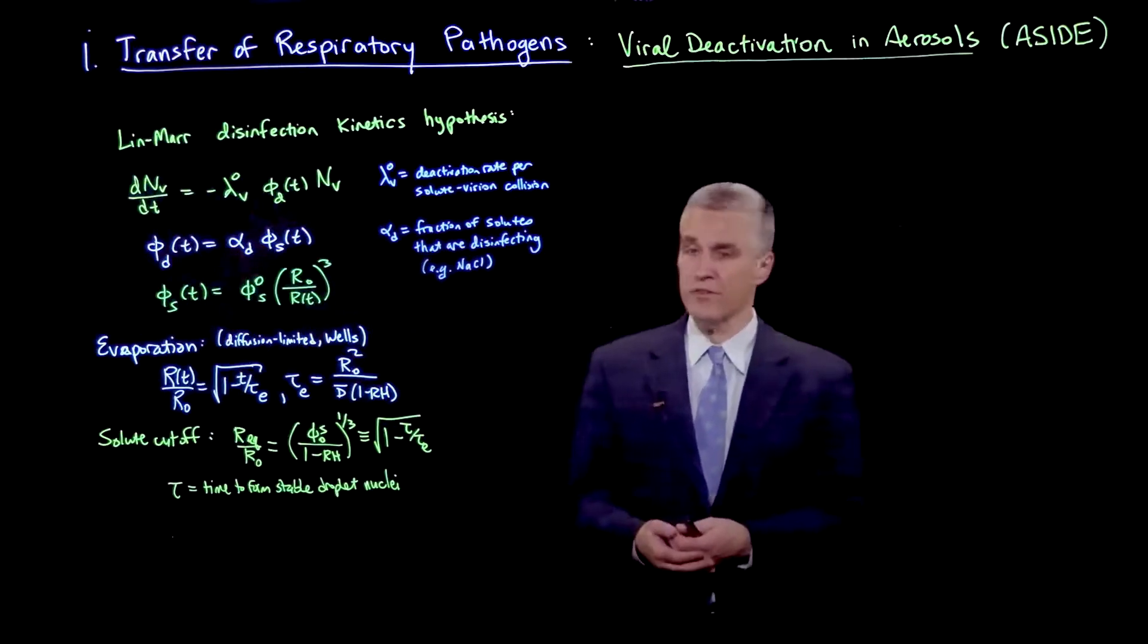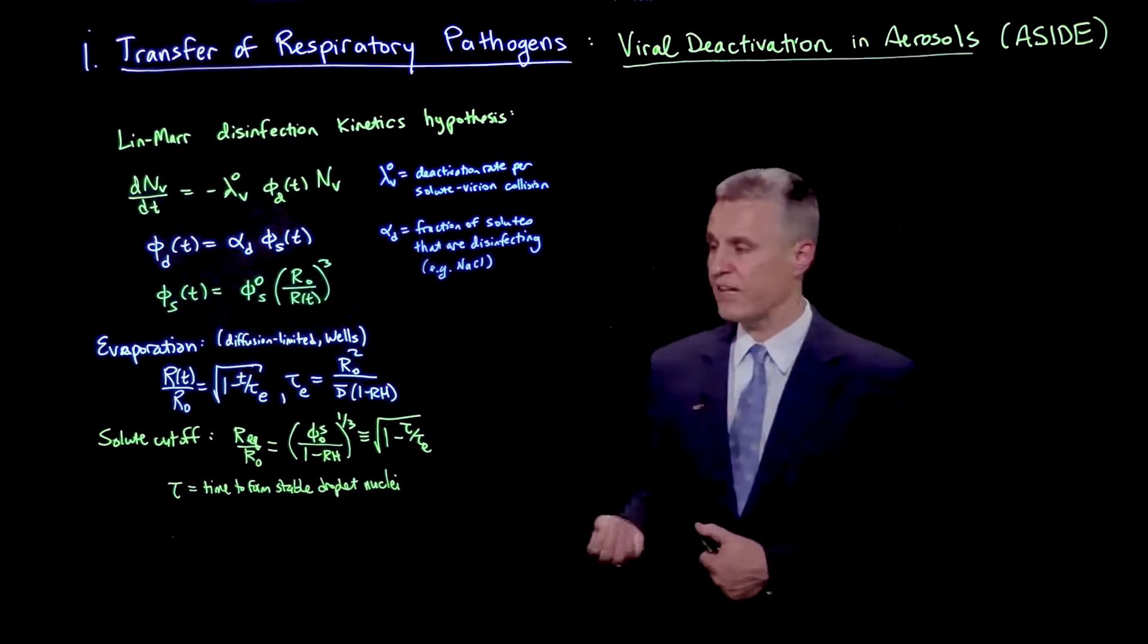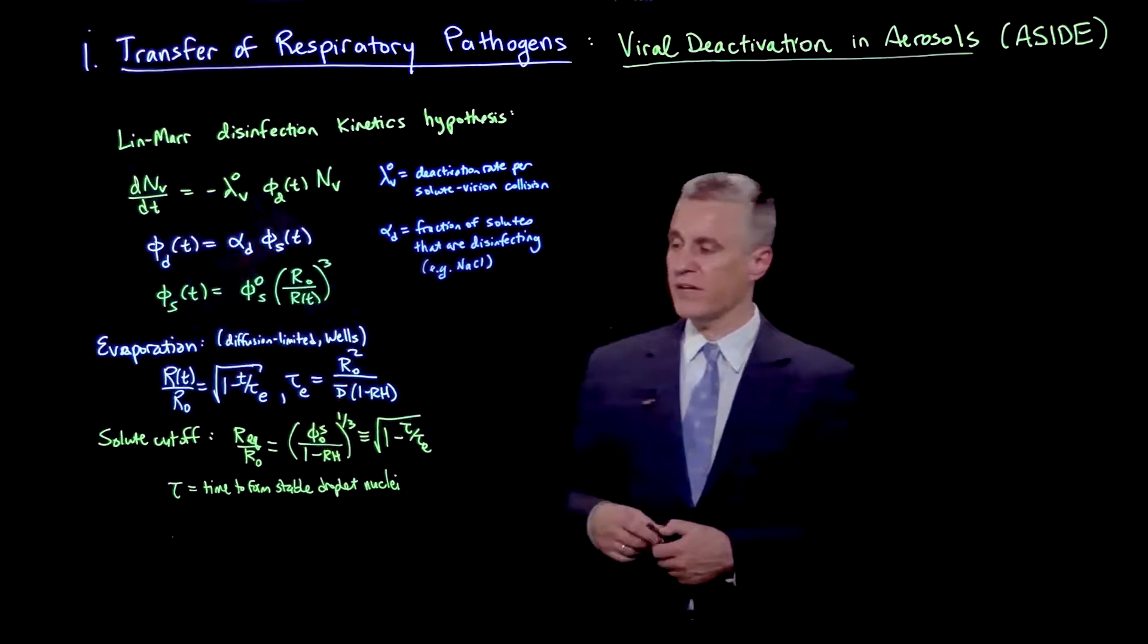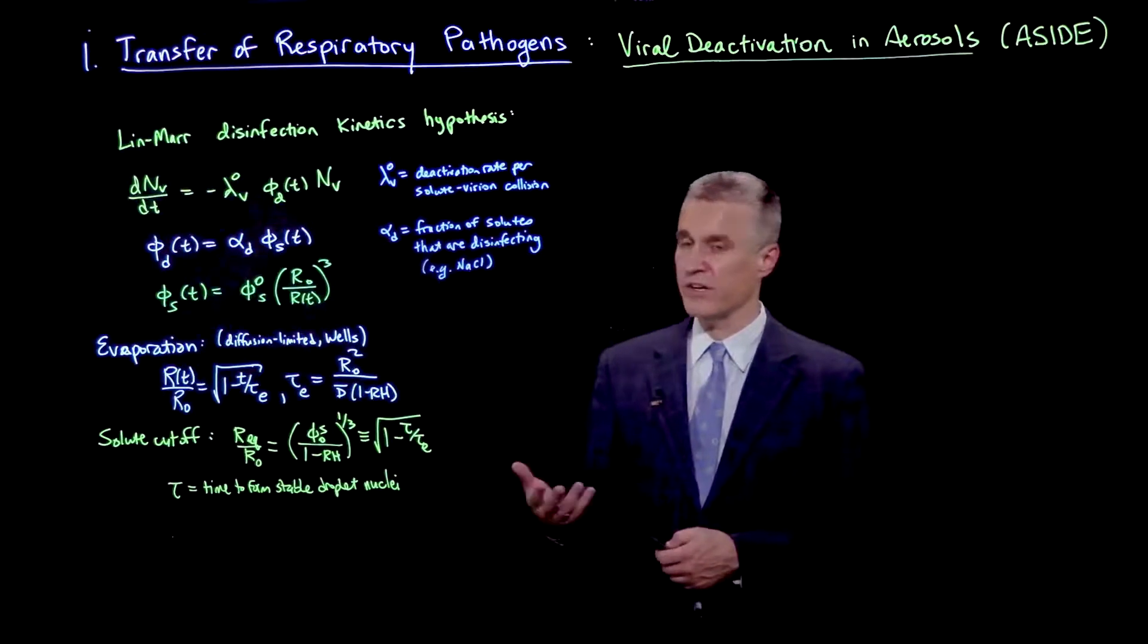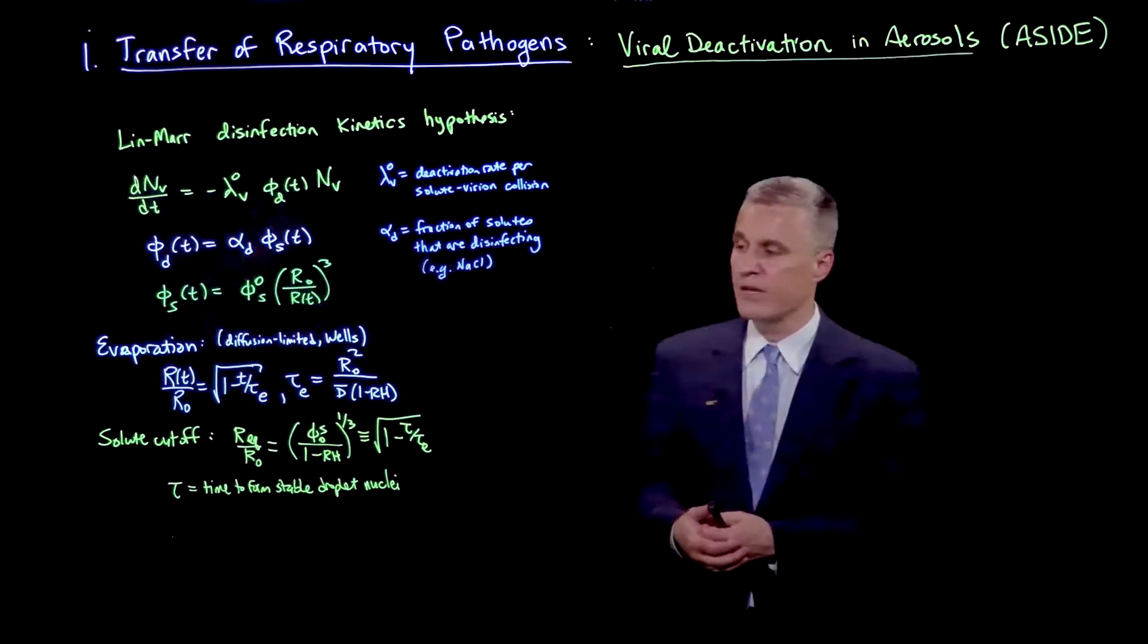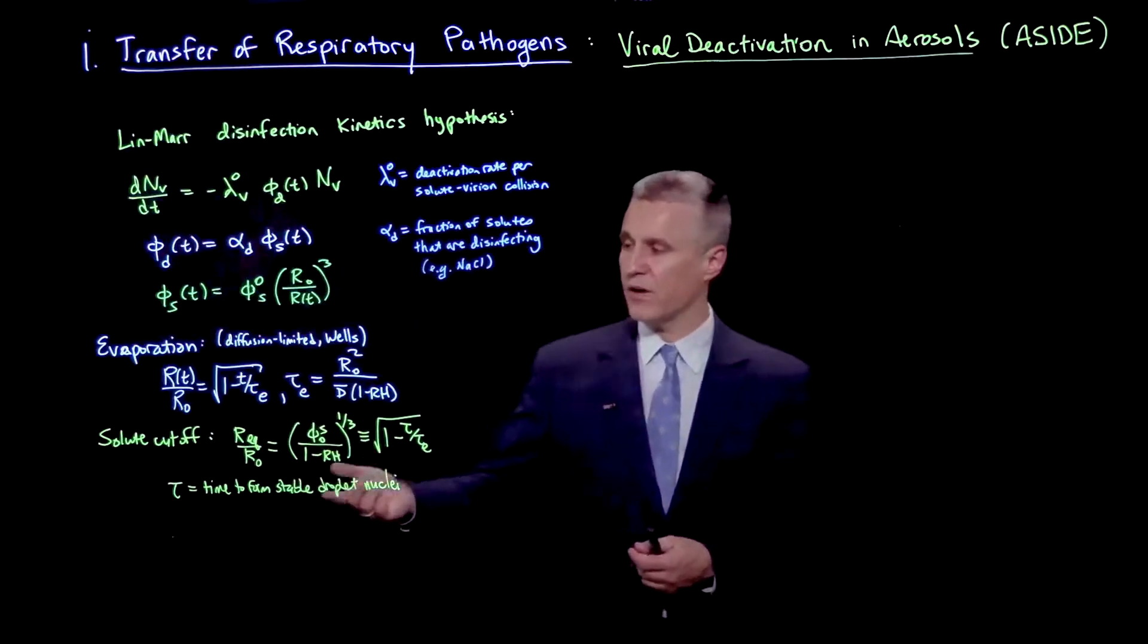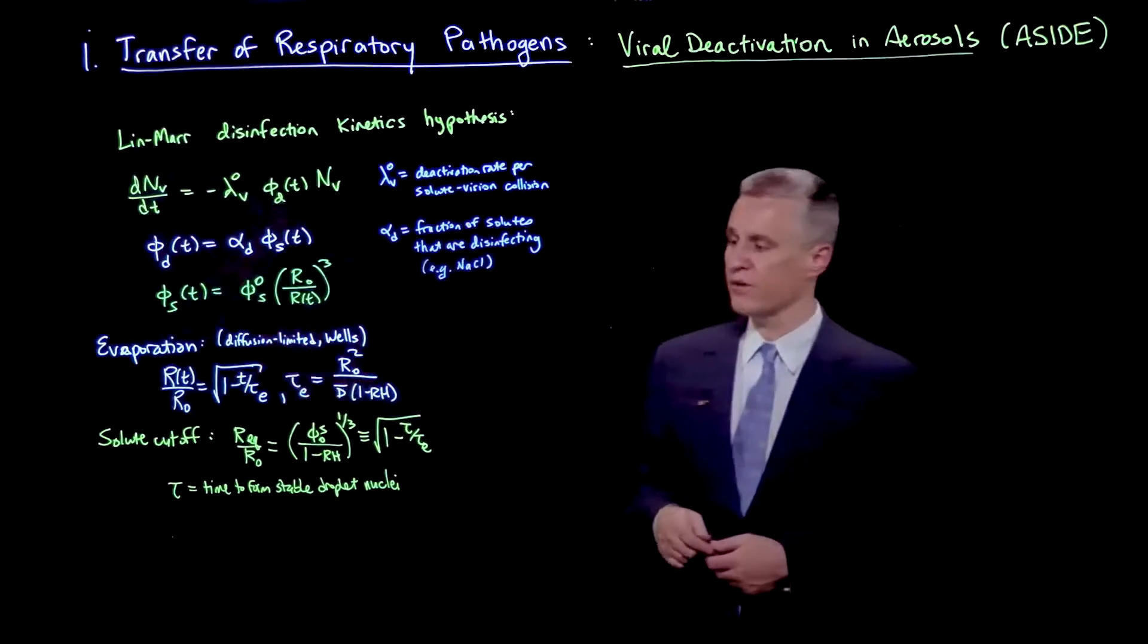When there is solute present, there's a cutoff, which we've also discussed, that gives you an equilibrium stable size of the droplet, r equilibrium relative to r0, which is given by phi s0, the solute volume fraction initially, divided by 1 minus rH, raised to the 1 third power. We can also define the time tau when you reach the equilibrium size by a diffusion-limited evaporation process. That's the time to form a stable droplet nucleus.